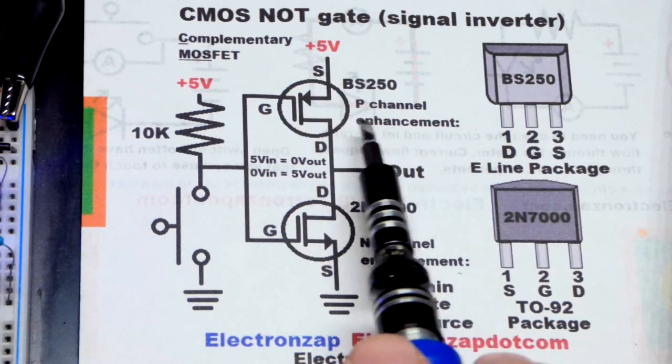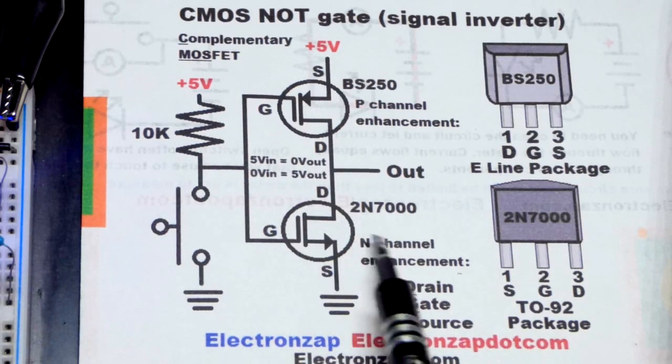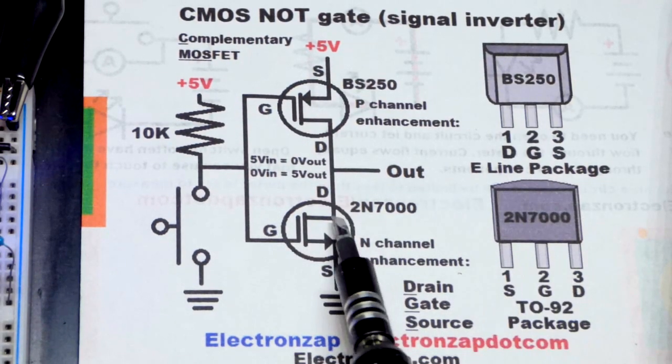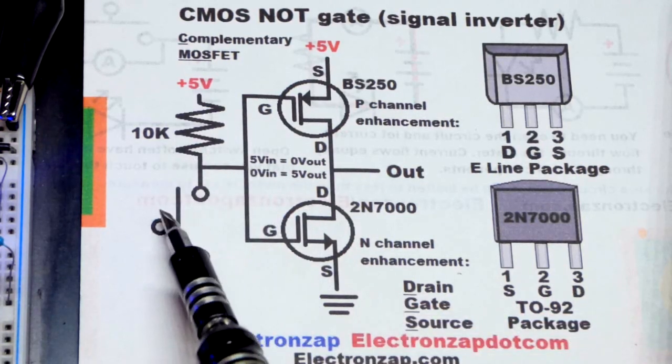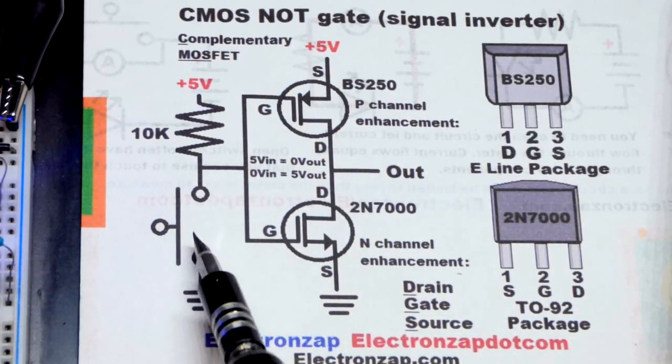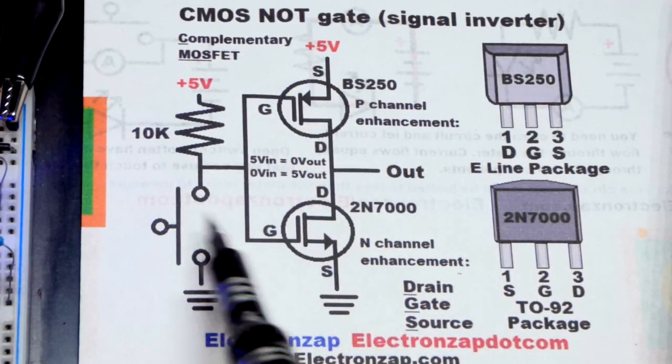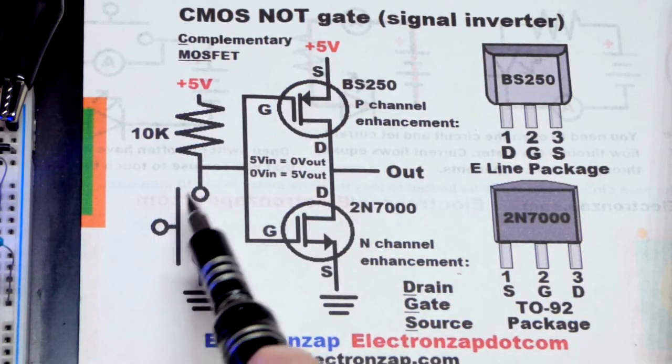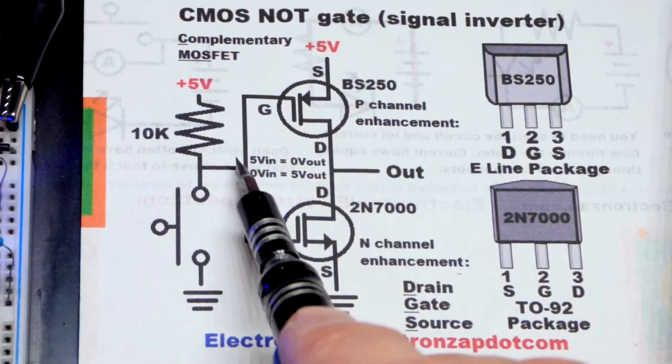So we got a P channel enhancement mode MOSFET right there and N channel enhancement mode down there. I'm going to go through this kind of quickly. With the switch open or the jumper removed, we have five volts going to the pins. That's because when this is open, that's basically infinite resistance. So this is practically none compared to that. And so we got five volts.